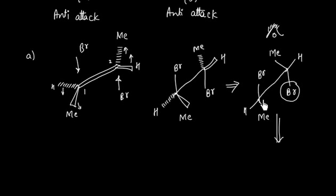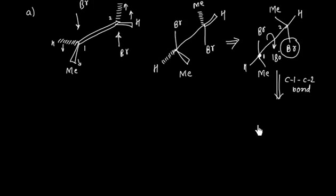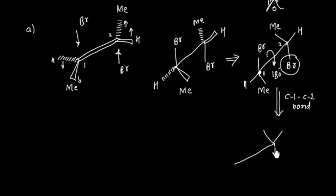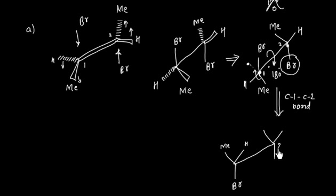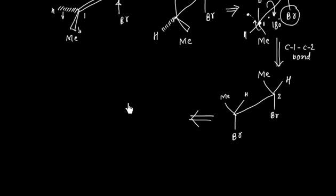One group is away from the observer on carbon-1, and I need a group away from the observer on carbon-2 as well. So what we will do is rotate by 180 degrees about the C1–C2 bond. After rotating 180 degrees, here we have a regular Y and here we also have a regular Y. Bromine on carbon-1 comes to the bottom. Methyl is diametrically opposite, so it rotates 180 degrees and reaches its new position. Hydrogen is also diametrically opposite. The configuration of carbon-2 remains as it is: bromine, methyl, and hydrogen.